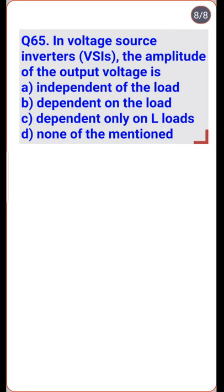In a VSI, the input voltage is maintained at a constant value and the amplitude of the output voltage does not depend on the load condition. However, the waveform of the load current and its magnitude depend upon the nature of the load impedance — so option A is the right one.